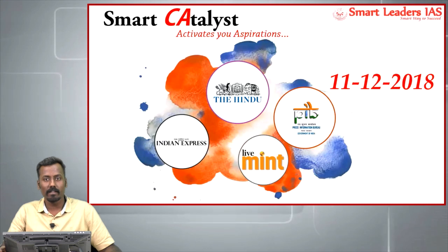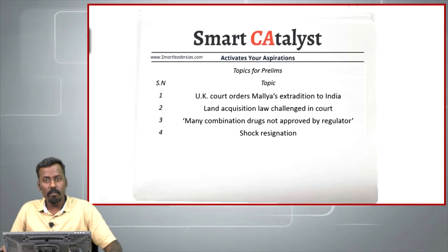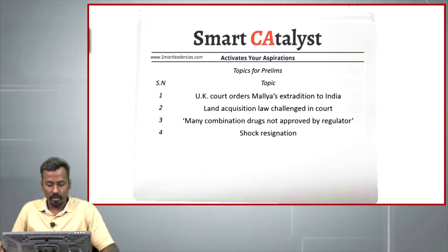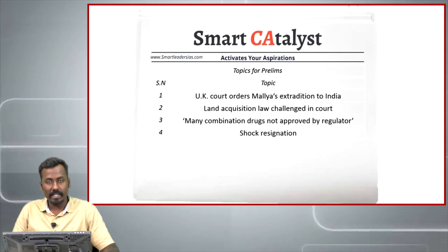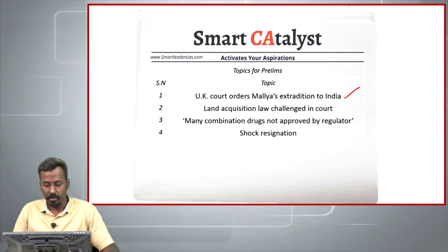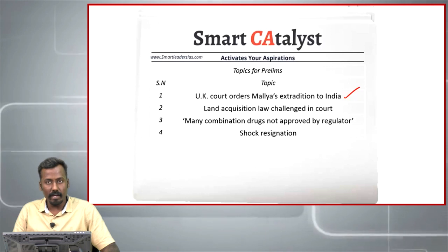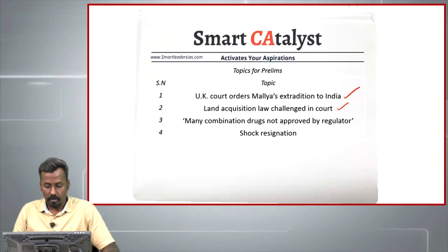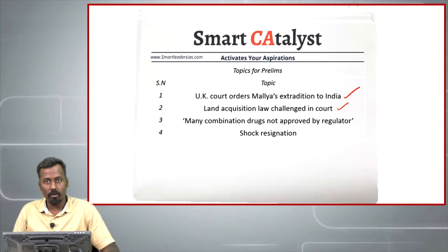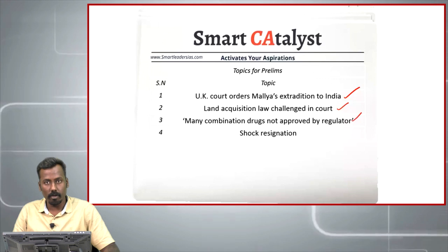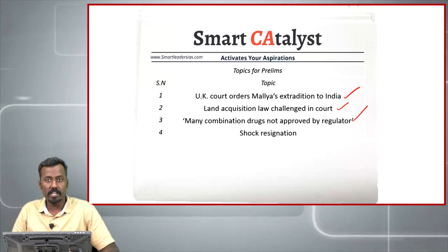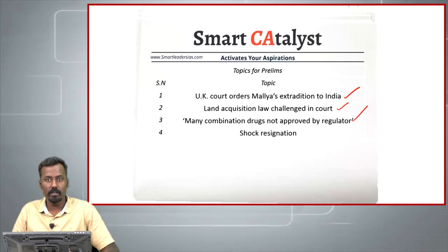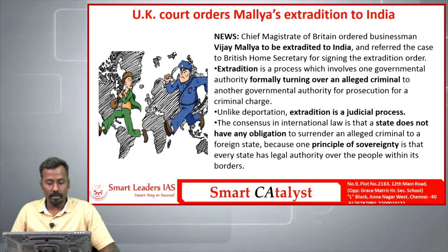Hi all, welcome to Smart Catalyst, 11th December 2018. Today we will be discussing four topics for prelims. The first is related with extradition of Vijay Mallya to India. The second is related with the case filed against the Land Acquisition Law. The third is about fixed drug combinations for tuberculosis. The last one is about the resignation of RBI Governor Urjit Patel.